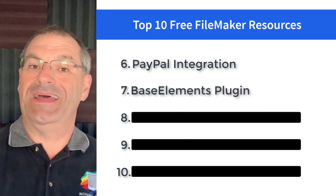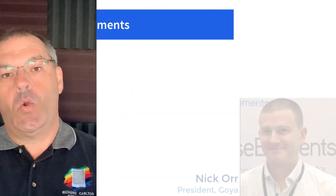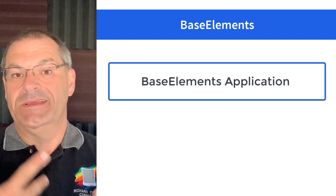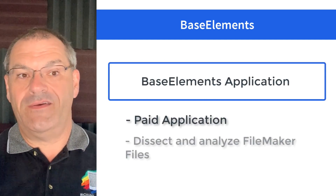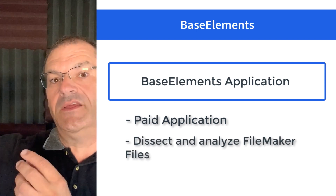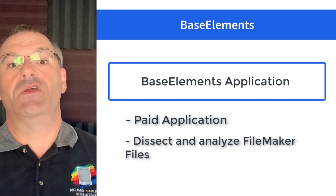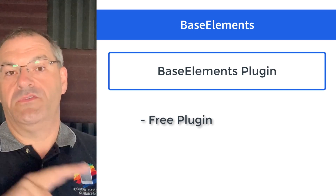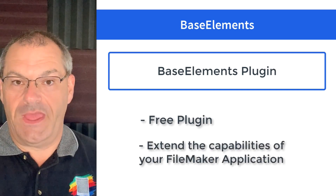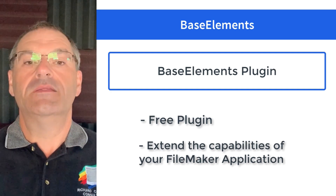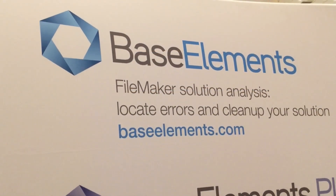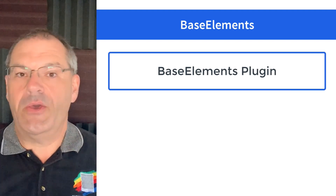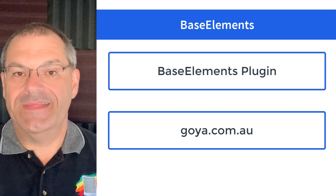Number seven is the Base Elements plugin. There's a company called Goya in Australia — the CEO is Nick Orr. They have two products with similar names: one is the paid Base Elements application, a diagnostic tool that takes apart a FileMaker file and tells you how it's built. They also have a free product called the Base Elements plugin, which works on Windows or Mac and extends the capabilities of your FileMaker application to do things FileMaker can't do by itself. This plugin is totally free and is primarily designed for developers or consultants — even if you're new but programming-savvy. It's very popular in the FileMaker community.